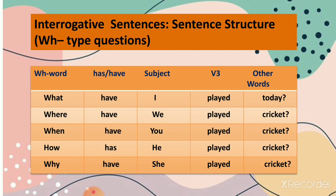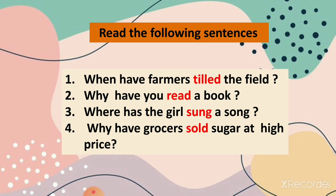Now interrogative sentences — WH-type questions. The sentence structure is: WH-word plus has/have plus subject plus verb third form plus other words. For example: What have I played today? Where have we played cricket? When have you played cricket? How has he played cricket? Why has she played cricket? Applying to our examples: When have farmers tiled the field? Why have you read a book? Where has the girl sung a song? Why have grocers sold sugar at high price?